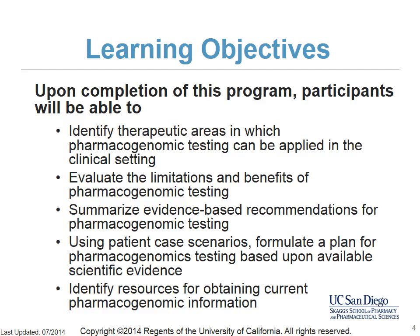Upon completion of this program, participants will be able to identify therapeutic areas in which pharmacogenomic testing can be applied in the clinical setting, evaluate the limitations and benefits of pharmacogenomic testing, summarize evidence-based recommendations for pharmacogenomic testing, formulate a plan for pharmacogenomics testing based upon available scientific evidence, and identify resources for obtaining current pharmacogenomic information.